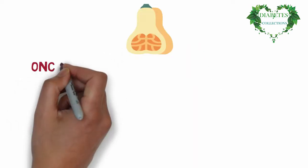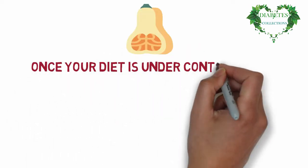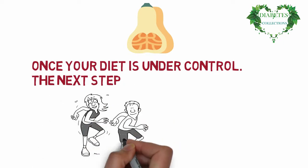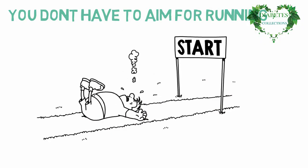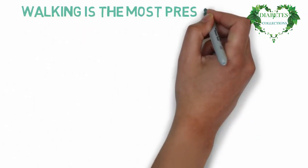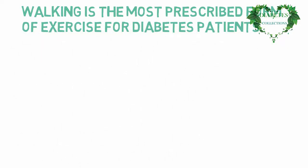Once your diet is under control, the next step is to begin an exercise program. You don't have to aim for running a marathon or even a mile. Walking is the most prescribed form of exercise for diabetes patients.